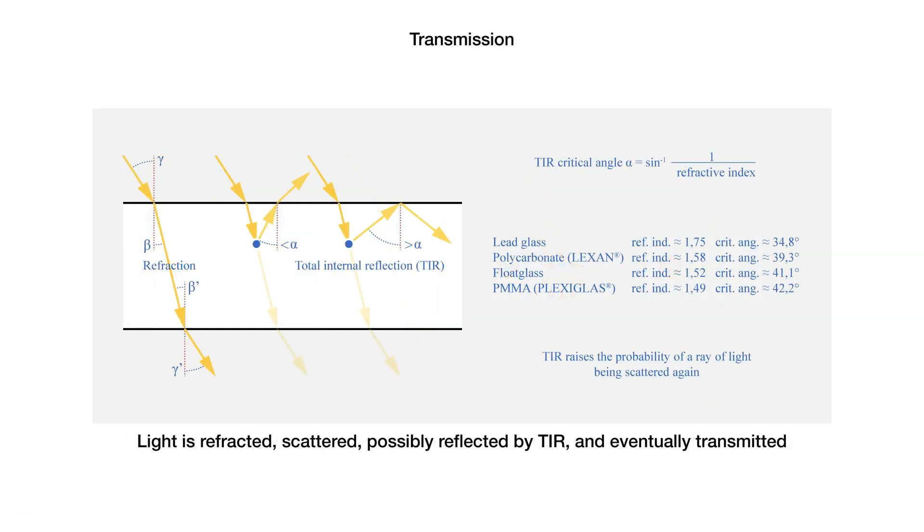When light is entering and exiting a transparent material, it is refracted twice. If it is scattered along the way, some of the light could pass right through. It could also exit the material in the wrong direction, or it could be subjected to total internal reflection, which increases the chance of being scattered again.